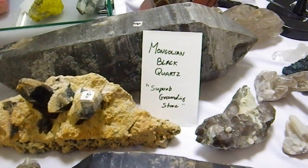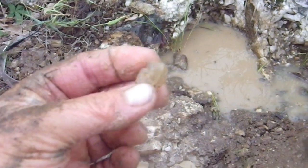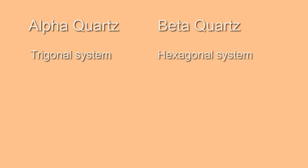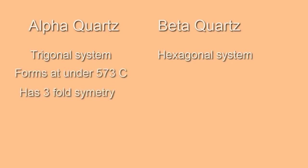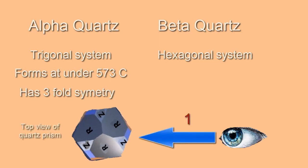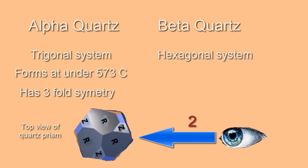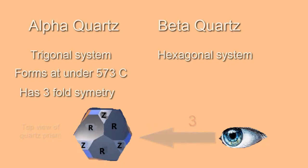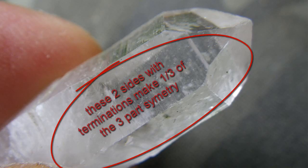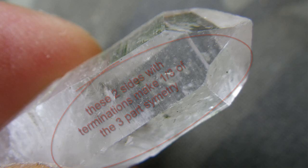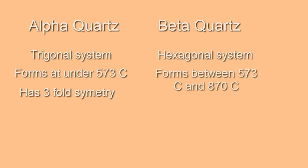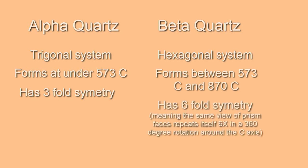In the case of quartz, it is found in two specific crystal systems: the trigonal system, in which alpha-quartz is found, and the hexagonal system, in which beta-quartz is found. Alpha-quartz forms at temperatures under 573 degrees Celsius and has a three-fold symmetry, meaning the arrangement of faces repeats itself three times as the crystal is rotated around the c-axis — the axis running up its central prism. Beta-quartz forms between 573 and 870 degrees Celsius and shows a six-fold symmetry, so as you rotate the upright crystal, the same image of termination and prism face repeats itself six times.